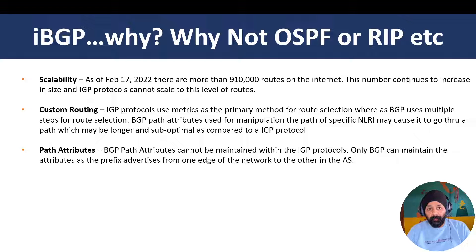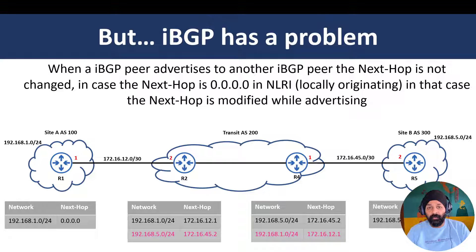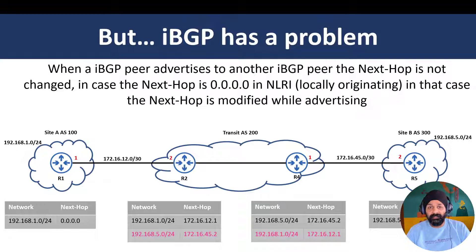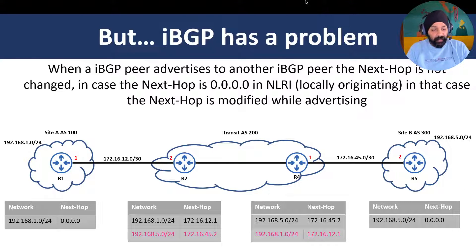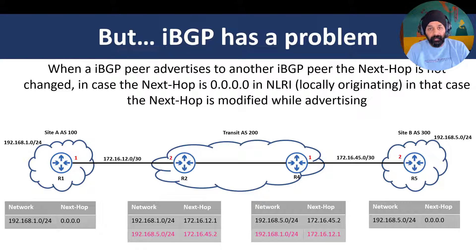iBGP has advantages over IGP protocols, which is why it's used for interior routing. But iBGP comes with its own set of problems. When an iBGP peer advertises to another iBGP peer, it will not manipulate the next-hop address — unless the NLRI is originating from within itself, meaning it has a next hop of 0.0.0.0. In that case the next hop is changed; otherwise it remains as-is. Let's look at an example.